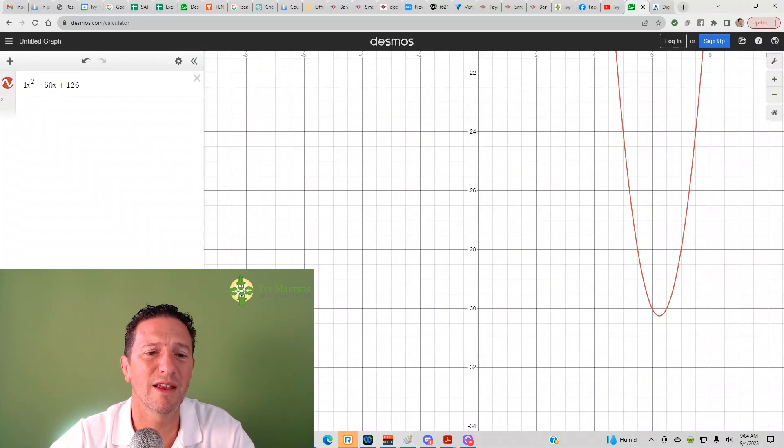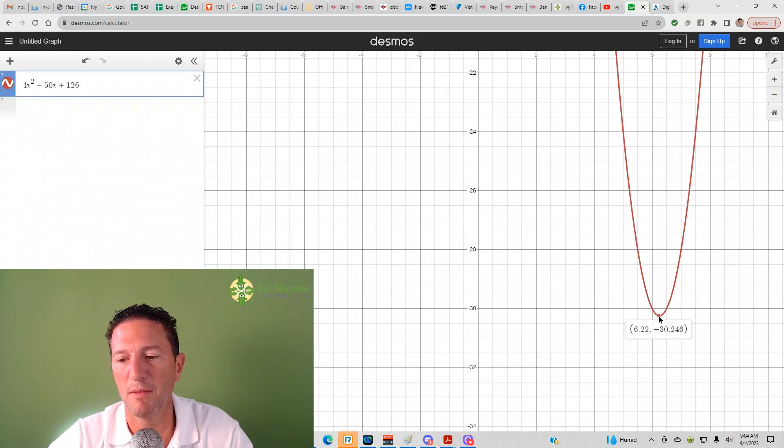Or you can just plug it into Desmos. 4x squared minus 50x plus 126, and you just click on the minimum. Whoops, it's a little bit off. You get 6.25, which is the decimal equivalent of 25 over 4.